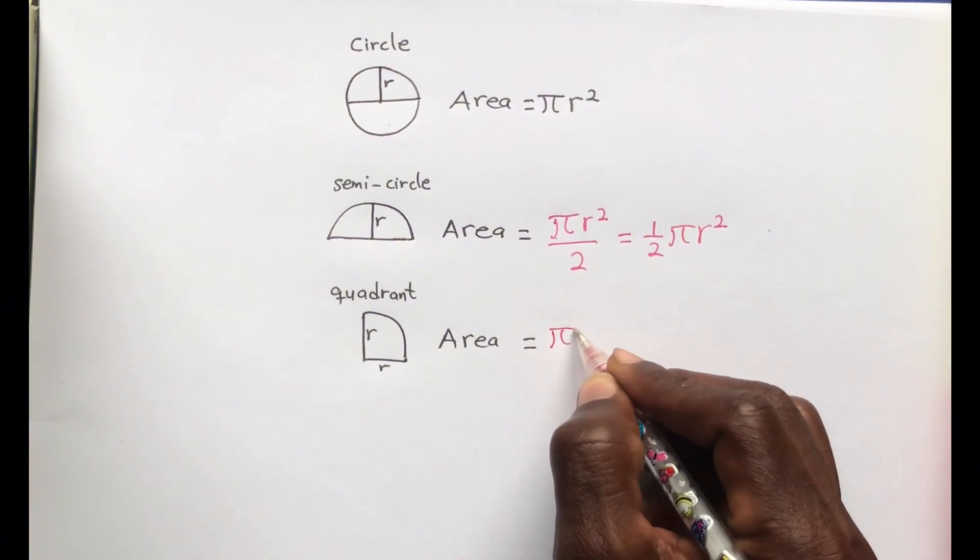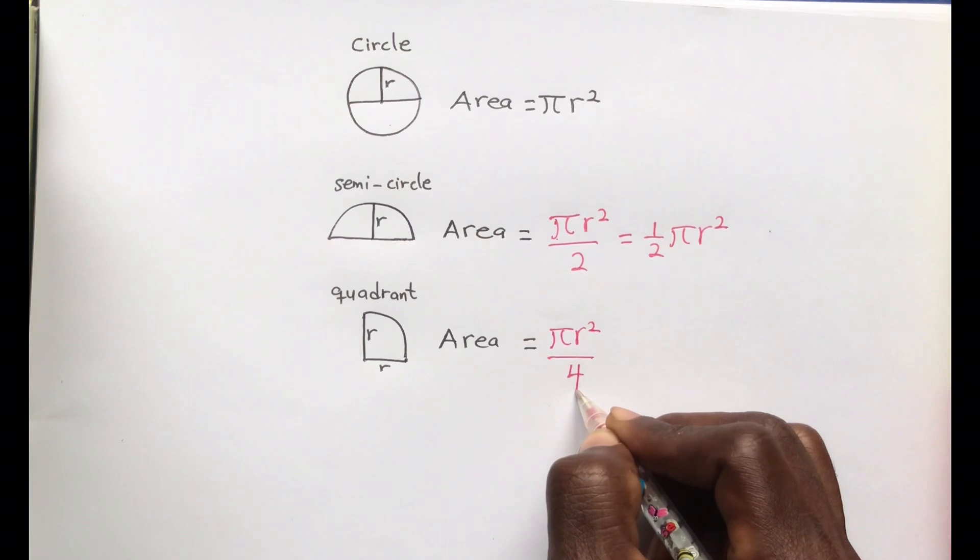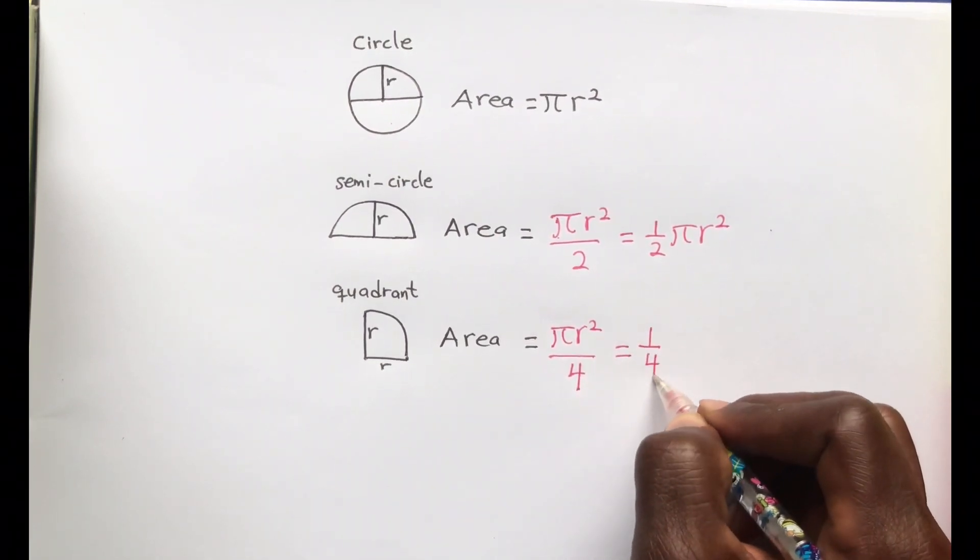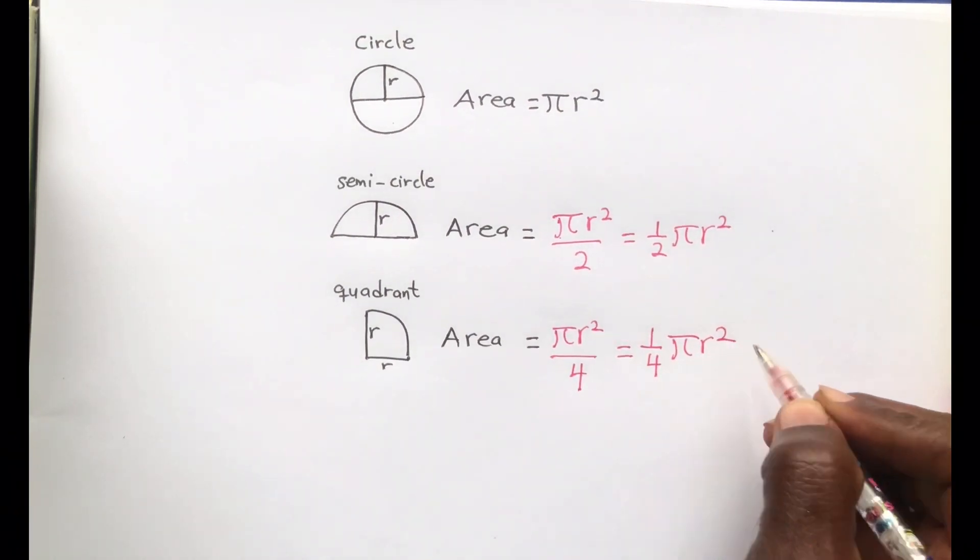which is pi r squared over 4. So in simple terms, it is one fourth of the area of a circle.